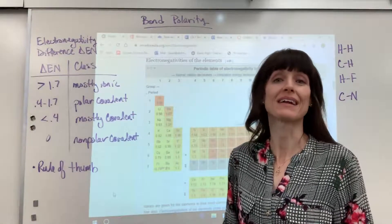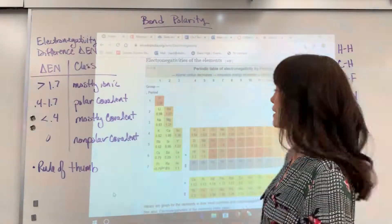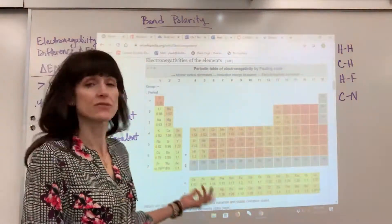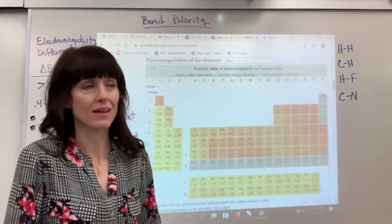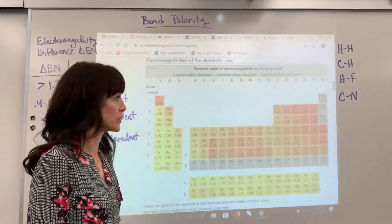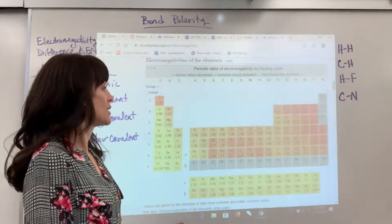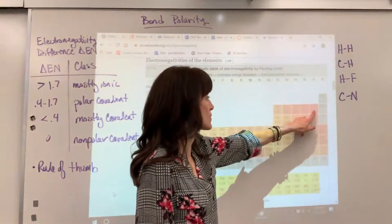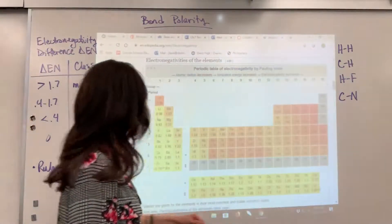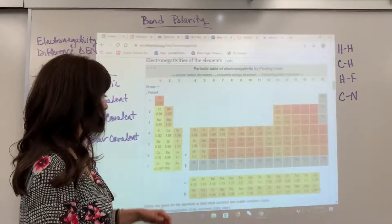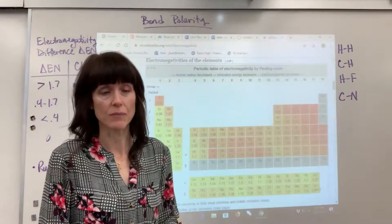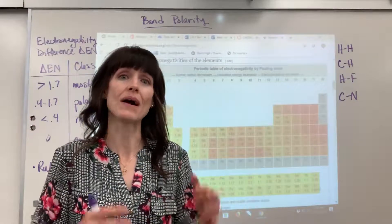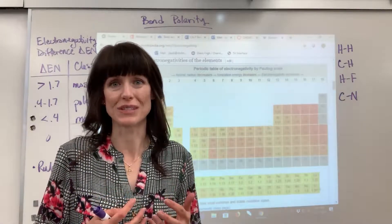Let's talk about polarity of bonds. We have a table from Linus Pauling — an electronegativity table from Wikipedia. It shows the trend very clearly: fluorine has the greatest electronegativity and cesium has the smallest. Electronegativity is the ability of an atom in a compound to attract an electron to itself.